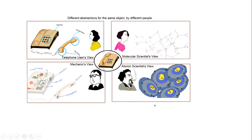This is another diagram showing how different persons and users have different abstractions about the same object. For a regular user, the telephone is just a dial pad, mouthpiece, and earpiece — she does not bother about the internal details, even though she knows it is much more complicated internally. She does not really have to bother about that.